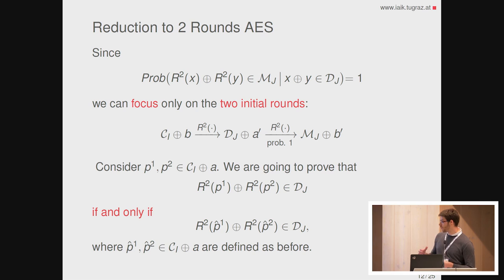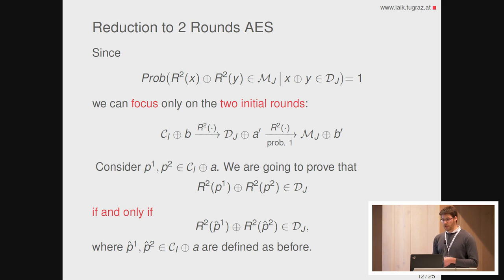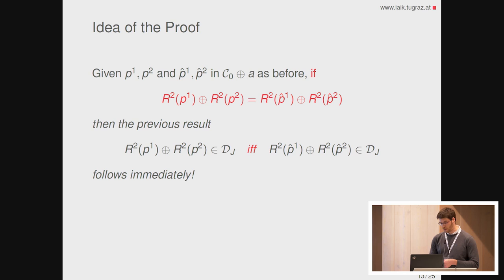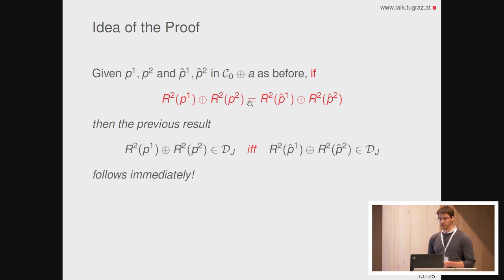Given p1 and p2, I am going to prove the following: if the corresponding ciphertexts after two rounds are in the same coset of T — equal in some diagonal — then there are other pairs of plaintexts for which the corresponding ciphertexts after two rounds have the same property, generated as before. The idea is simple: if we consider the plaintexts as before and prove that a certain equality holds, then the previous result follows immediately. If these two ciphertexts are in the same coset of T and this equality holds, then the other pair of ciphertexts is also in the same coset of T — we just need to verify this equality.